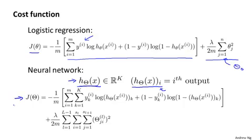My cost function J of theta is now going to be the following: minus one over M of a sum of a similar term to what we had for logistic regression except that we have this sum from K equals one through K. This summation is basically a sum over my K output units. So if I have four output units, that is the final layer of my neural network has four output units, then this is a sum from K equals one through four of basically the logistic regression algorithm's cost function but summing that cost function over each of my four output units in turn.